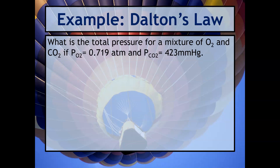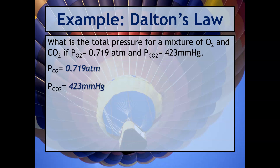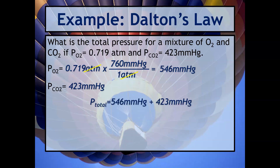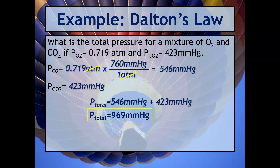Here's an example: what's the total pressure for a mixture of O₂ and CO₂ if the partial pressure of O₂ is given and the partial pressure of CO₂ is given? List out everything we have — and the pressure units do not match, so you're going to have to convert one into the other. I'm going to convert to mmHg to make sure those units match. Now it matches, and to solve for the total pressure, we just add those two values together to get 969 millimeters of mercury.